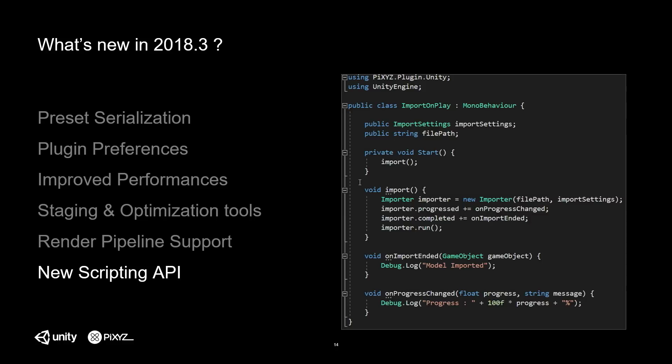Finally, in this version, we completely changed the API. As some of you may know, we had an API so you can use the plugin not only through a GUI but directly from code. This is really useful if you're developing a runtime application and need to enable importation of assets during runtime. We improved the API in all aspects — it's easier to use, has no missing features, and you can run asynchronous as well as synchronous jobs.